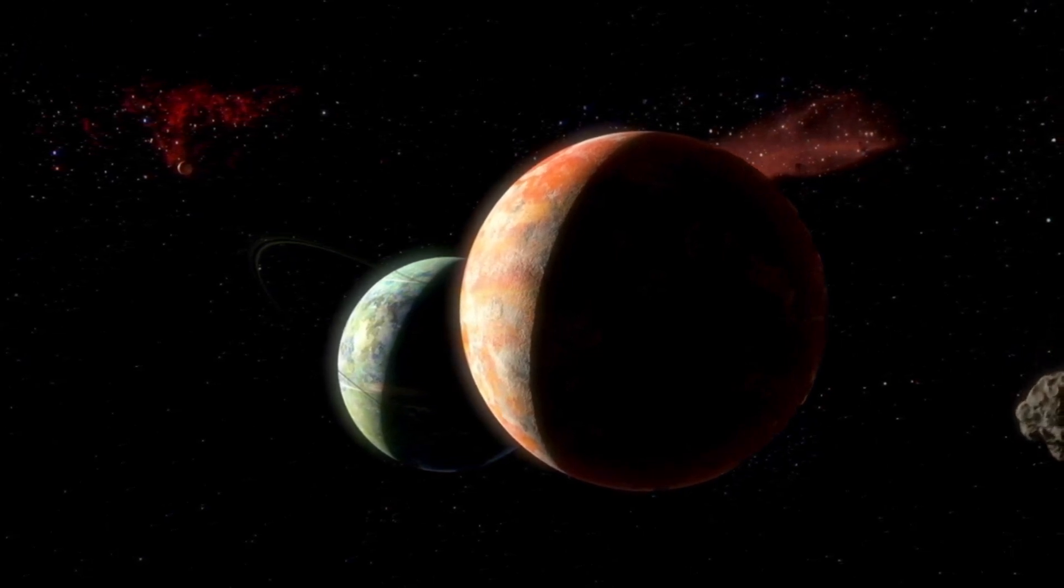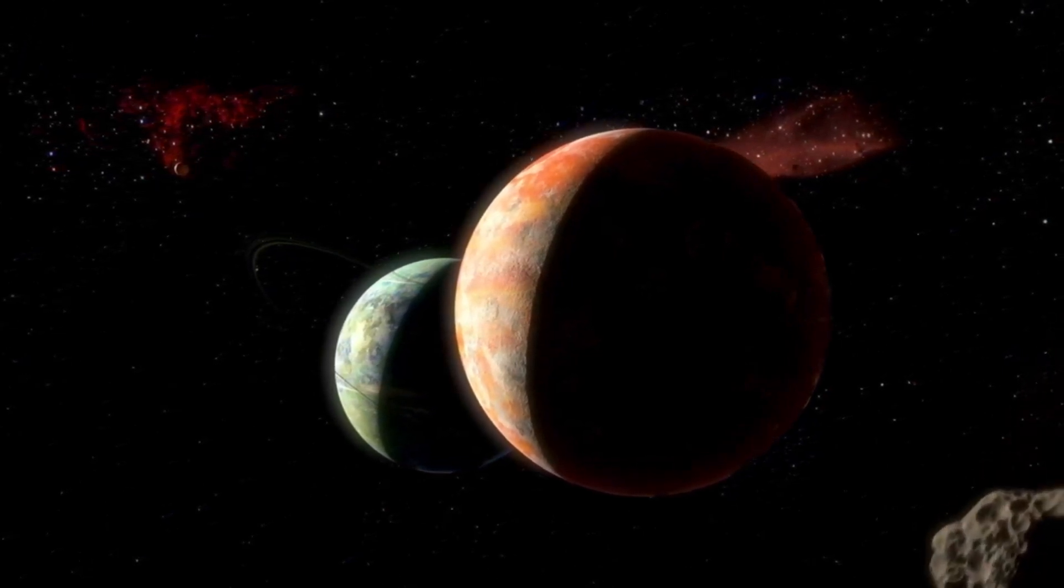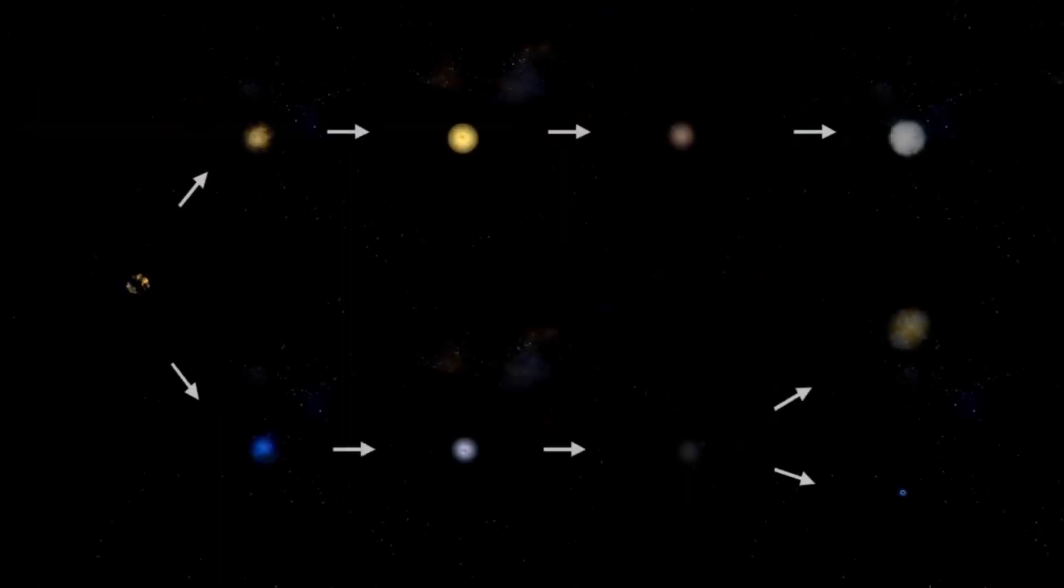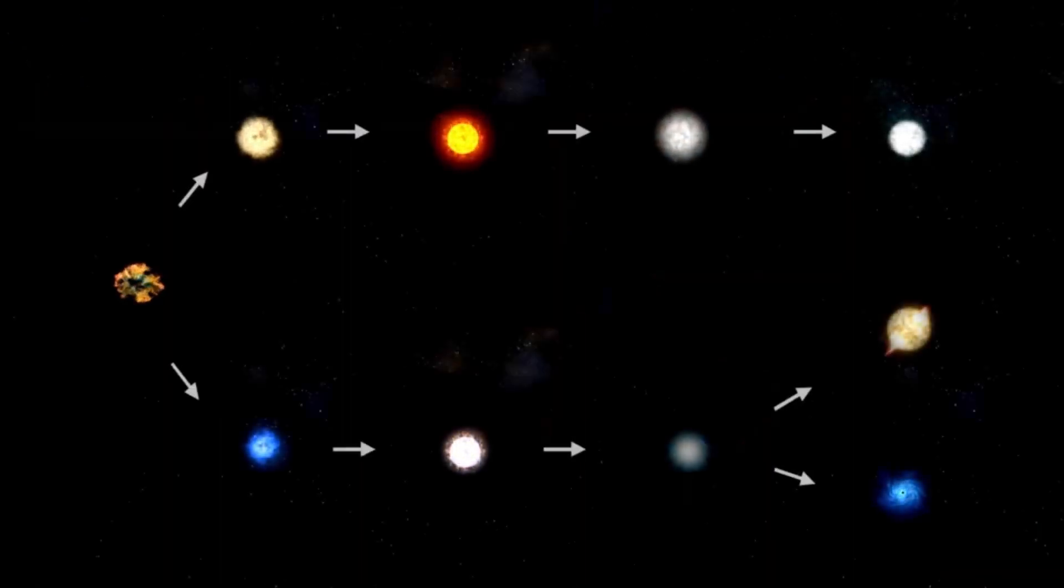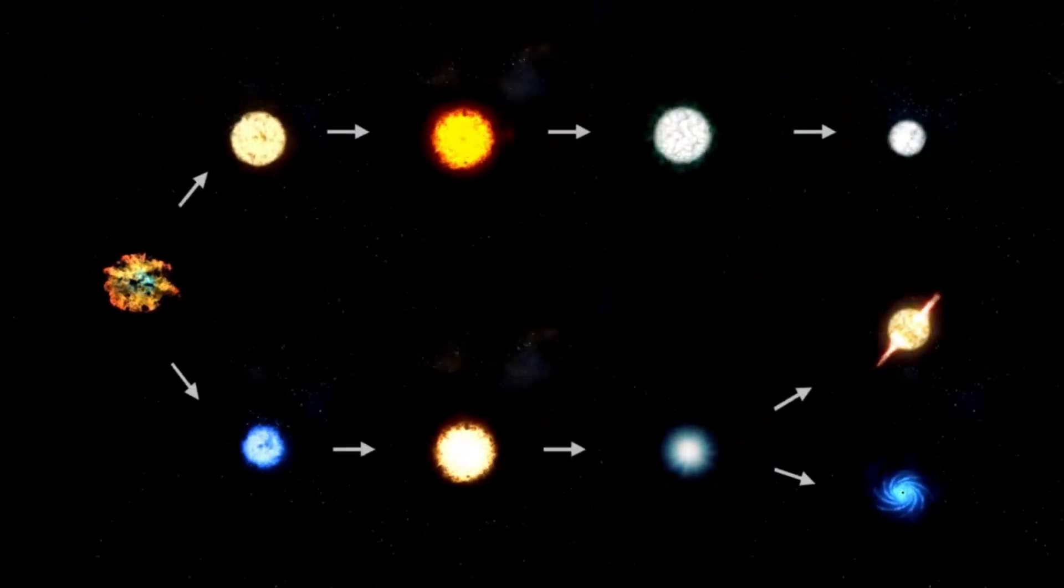This type of star is notorious for its instability as it nears the end of its life, and Betelgeuse has provided ample proof of this through its irregular dimming and brightening cycles.